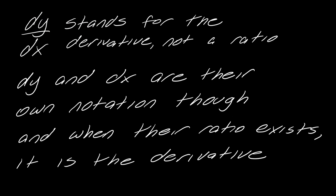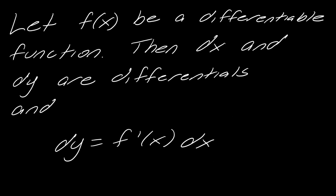So hopefully that makes sense. It's kind of a strange thing, I know. So let's talk about what is a differential. So dy and dx are both differentials. Let f(x) be a differentiable function. Then dx and dy are differentials, and they are defined like this. And so just so that you're viewing this in the right way, we consider dx to be something independent, and then dy is always dependent on your choice of dx.